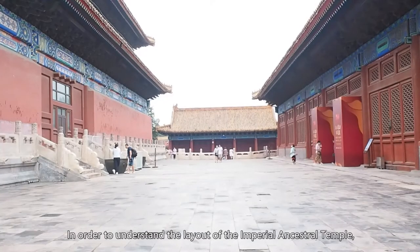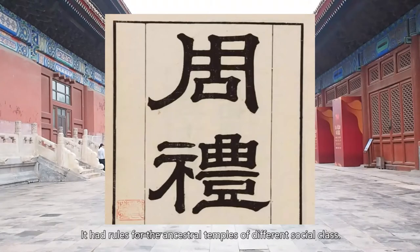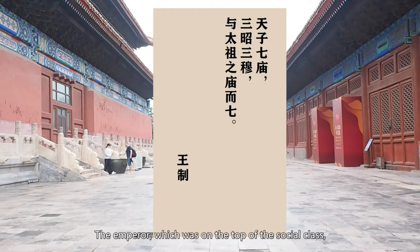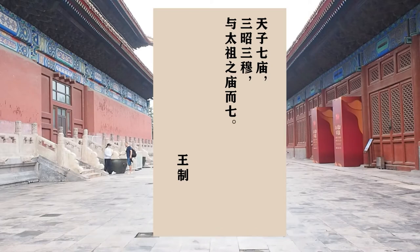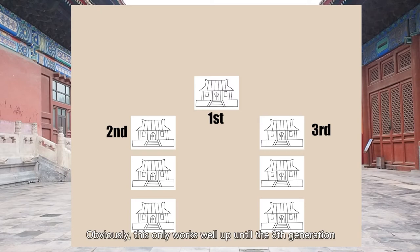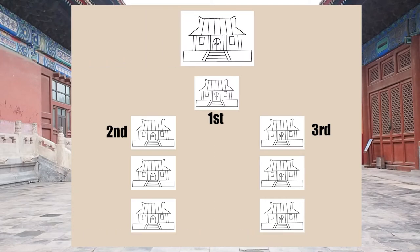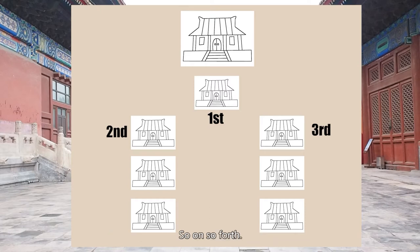In order to understand the layout of the Imperial Ancestral Temple, we have to refer to the Rites of the Zhou Dynasty again. The emperor, on the top of the social class, was allowed to establish seven halls to hold the memorial tablets of his ancestors, each hall holding one. The founding father of the dynasty held the most honored position. This system worked until the eighth generation, after which the tablet of the second emperor would be moved to a different hall for remote emperors, so on and so forth. The tablet of the founding emperor would never be moved.